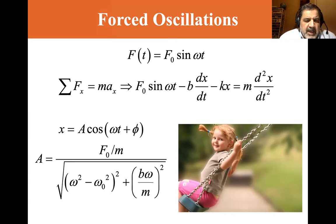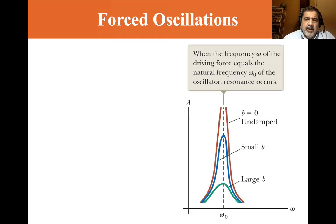And the amplitude is given by F0, the resonant frequency, divided by m, divided by the square root of omega squared minus omega zero squared squared plus b omega over m squared.